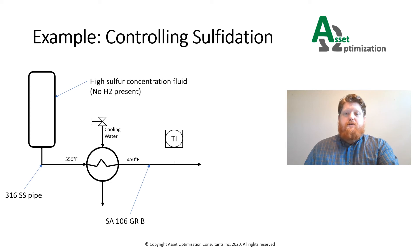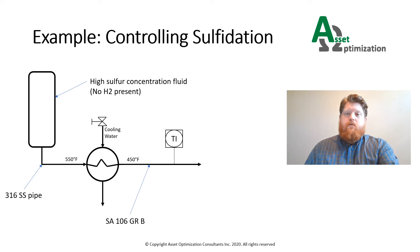An alarm for action may be set at 500 degrees Fahrenheit. If the temperature after the exchanger were to raise above 500, whether it be from cooling water upset or process upset from upstream, an alarm would be triggered and an operator would investigate to correct the issue before too much damage occurs. If the temperature is controlled properly, then excess damage to the pipes downstream of the equipment can be avoided.